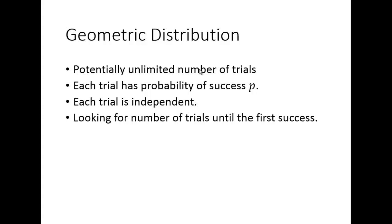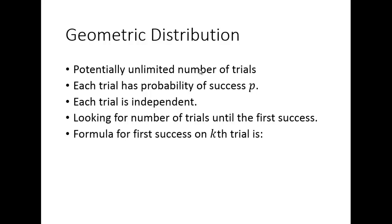Think of flipping a coin over and over until you get the first head — it could be tail, tail, tail, head, or a head right away, or in theory a billion tails before the first head. The formula for getting the first success on the kth trial is (1 minus p) to the k minus 1, times p — the k-th trial is a success and all previous k minus 1 trials were failures.